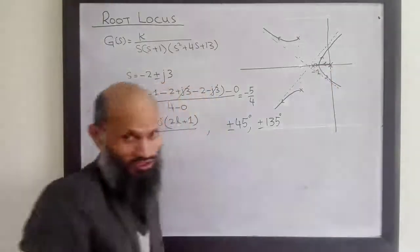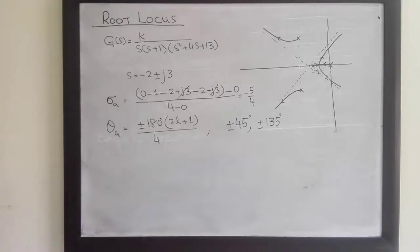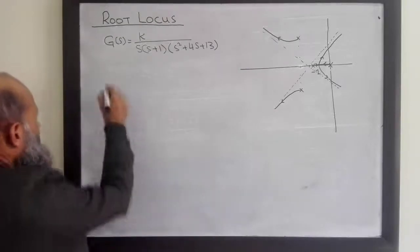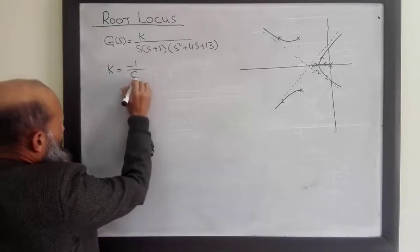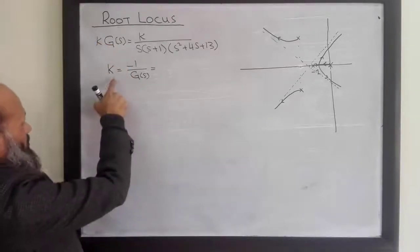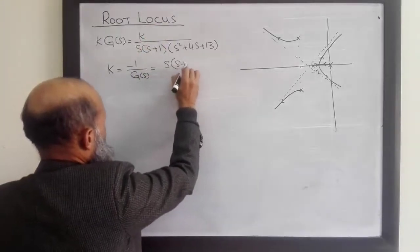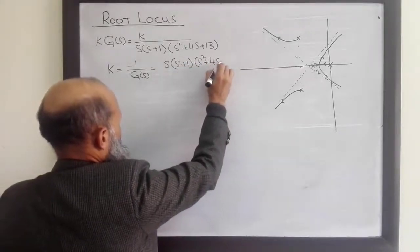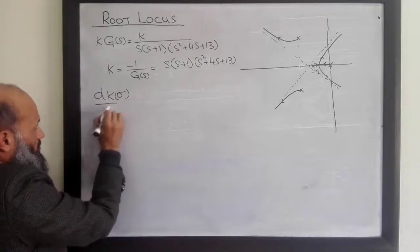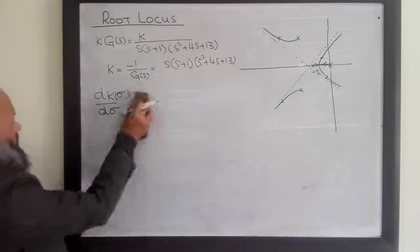We can refine this root locus by determining more details — for example, we can determine the breakaway point. To determine it, we write K as a function of the real variable σ and take its derivative. So K = -1/G(s), and we differentiate with respect to σ.